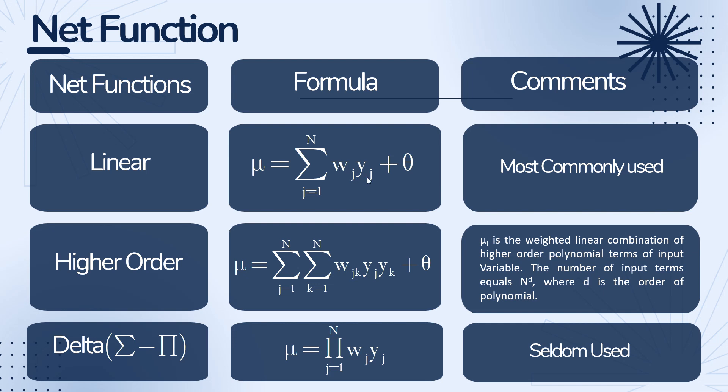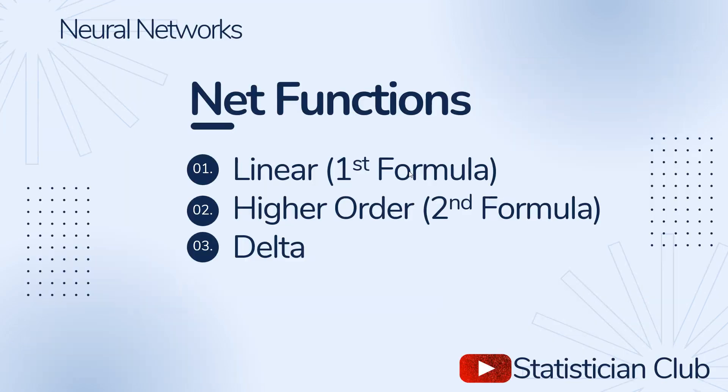yj is the input data. We multiply weights with input data y plus theta is the bias term. Adding this term y1w1, y2w2, and then add these terms plus theta, the bias term.